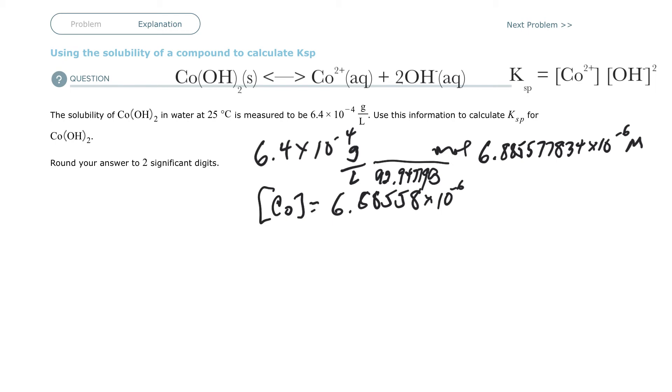And now I look here and say that this is 1 to 2. So for every one of these, I have double this. So I have to take that 6.88 and double it.